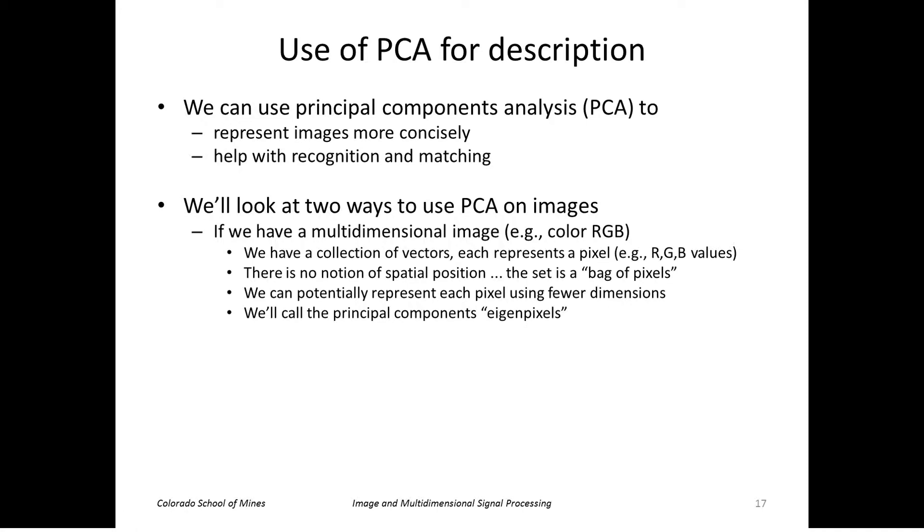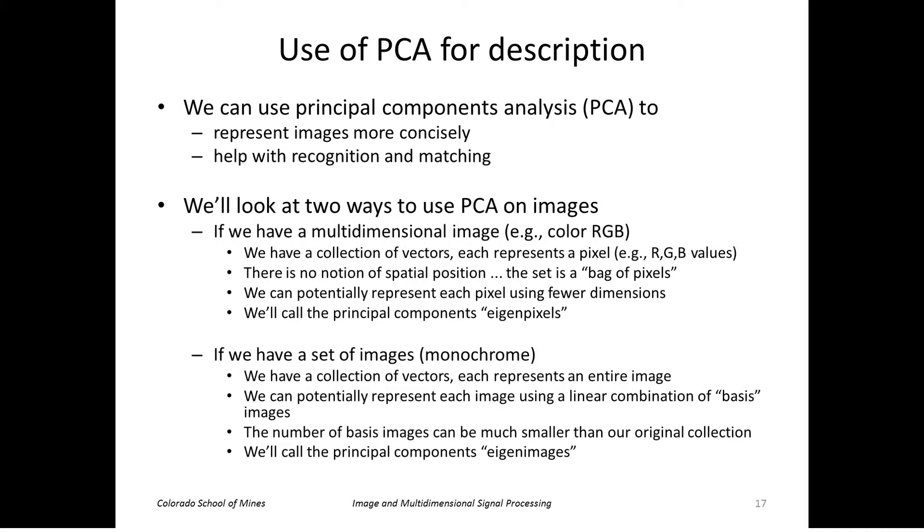We'll also look at another way to use PCA. If we have a set of images, not a single image but a set of images where each one is monochrome or a single color, in this case our vectors, each vector will represent an entire image. Again, we'll do PCA, principal component analysis, where the principal components will be images or basis images. We can represent any image in our set using a linear combination of those basis images. In those cases, the principal components will be called eigenimages.